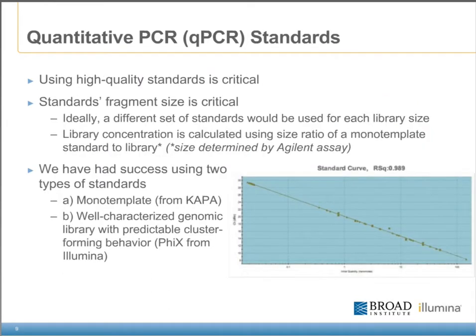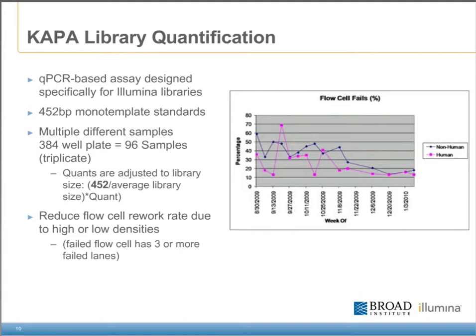Using a high-quality set of standards is critical to the accuracy of qPCR. Ideally we would use a different set of standards for each different library size, but this isn't really feasible in our high-throughput situation with so many different sample types and sizes. Instead, our main standard is a synthetic mono-template from Kappa. We can calculate the concentration of our samples by using a size ratio of standard size to library size. We recommend this standard, but we did have some success using Phi-X from Illumina. The most important factor is to use a well-characterized library as a standard. The Kappa library quantification kit is a qPCR-based assay specifically designed for quantifying Illumina libraries. Since we determine our quants based on a size ratio, we can run a large variety of samples on one qPCR plate.